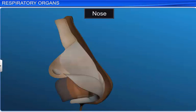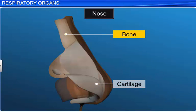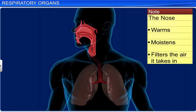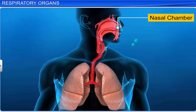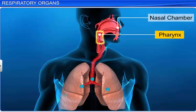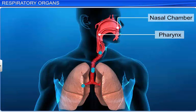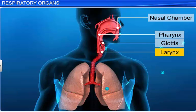The nose is made of cartilage and bone. While inhaling, it warms, moistens, and filters air that enters the body through the nostrils. This air then passes through the nasal chamber. The nasal chamber opens into the pharynx, which is the common passage for food and air. The pharynx opens through the glottis of the larynx region into the trachea.